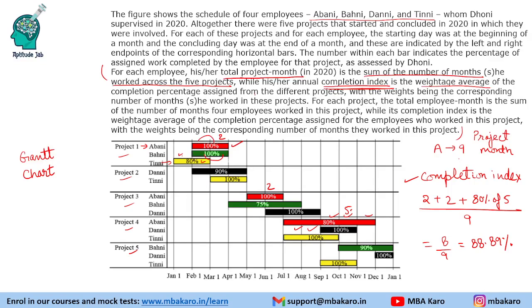For each project, we also find the employee month — that is, the sum of the number of months all employees worked on the project. For example, in Project 1 the employee month is 6 (2 + 2 + 2). The completion index for a project is similarly the weighted average: 2 + 2 + 80% of 2 = 1.6, giving 5.6 divided by 6. That is the project completion index.